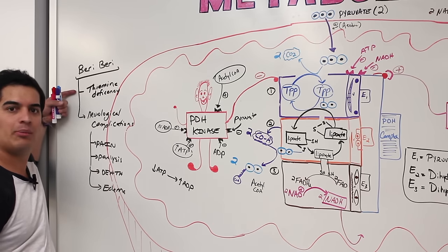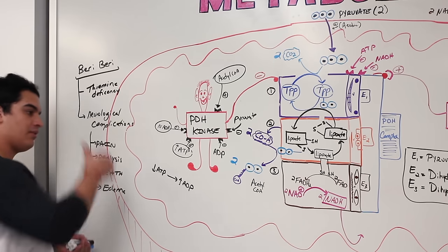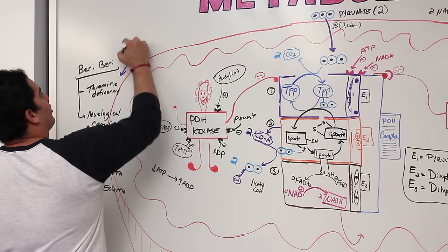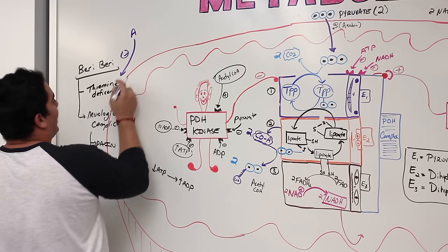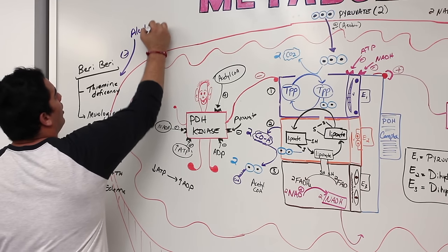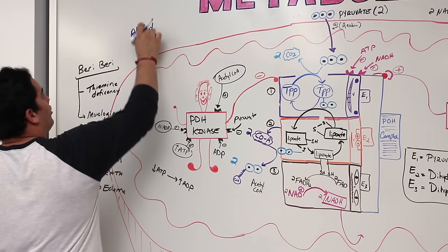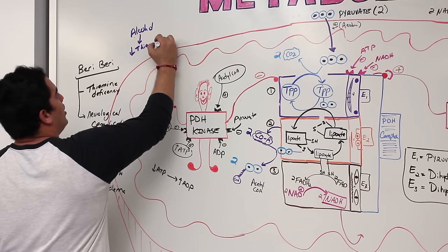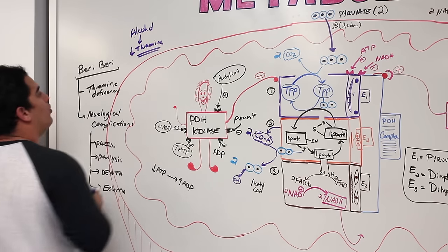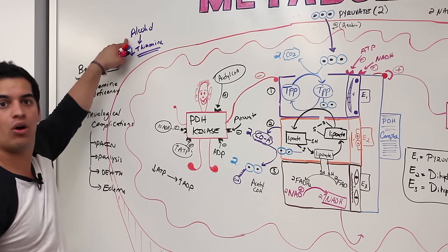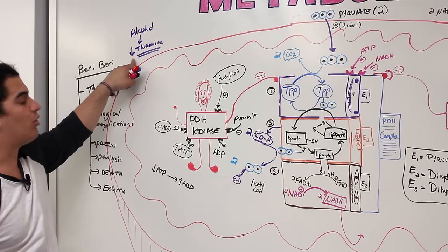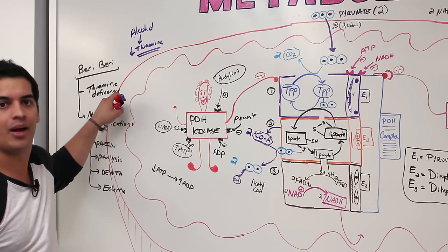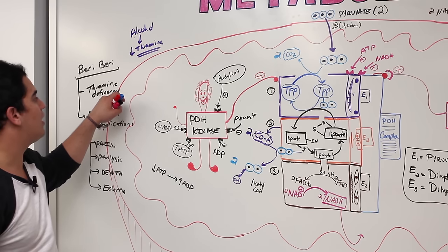Thiamine deficiency can result from excessive alcohol consumption, since alcohol has no nutritional value and is not rich in thiamine. It can also result from eating only white rice, which doesn't provide enough thiamine.